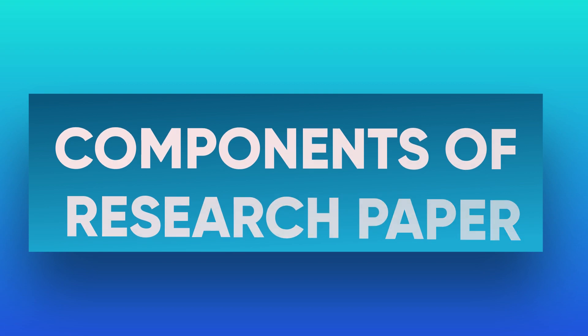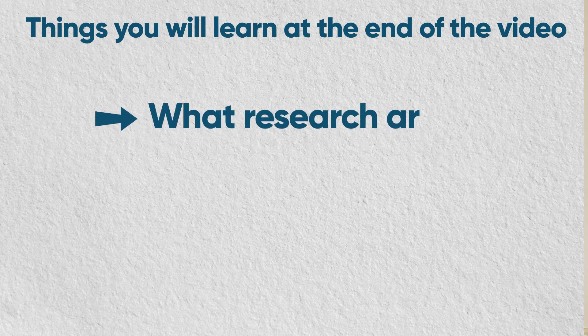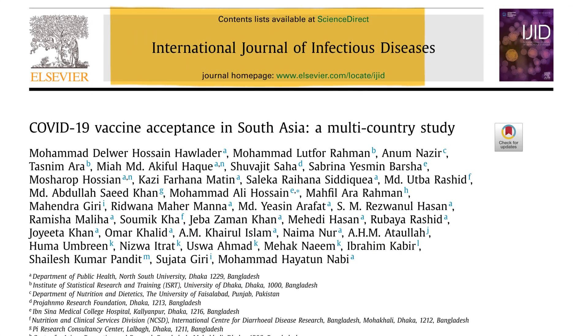Hello guys, welcome to our channel. Today we are going to talk about the components of a research paper — what are the things that need to go in each section. I'm going to take this example research article published in the International Journal of Infectious Disease, titled 'COVID-19 Vaccine Acceptance in South Asia: A Multi-Country Study,' and go through each section.